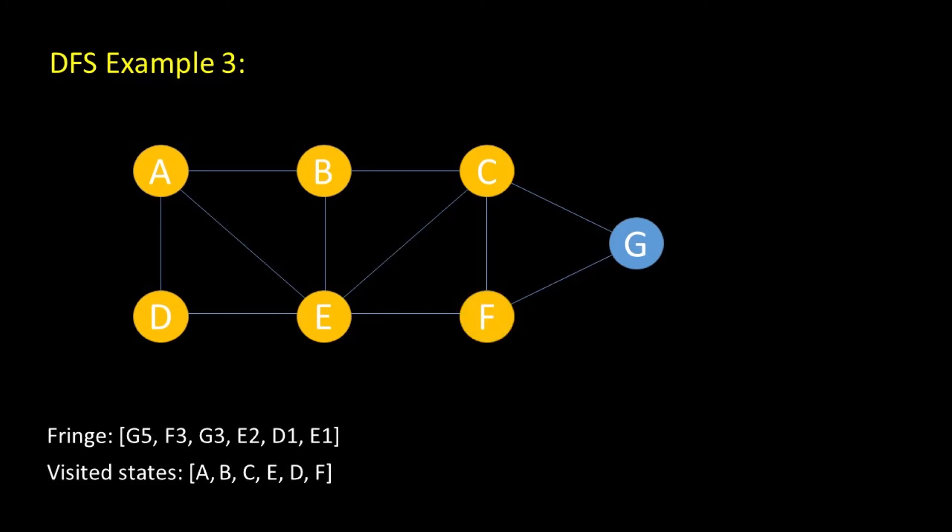We visit F. Is F the goal node? No. So we expand F to get to G. We visit node G. Is G the goal node? Yes. So we expand G and then the search algorithm stops.